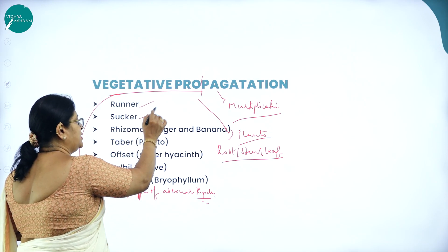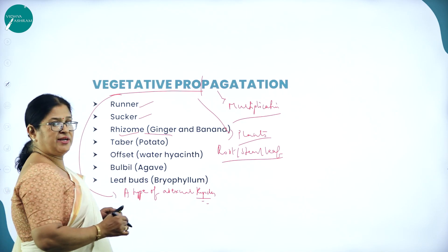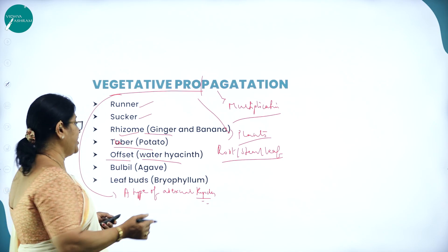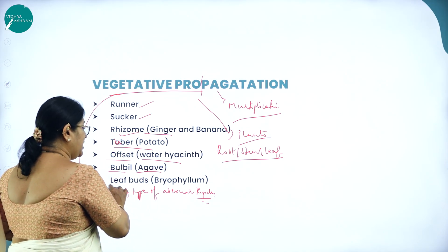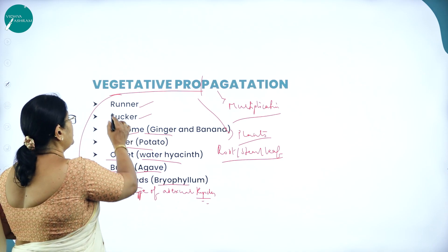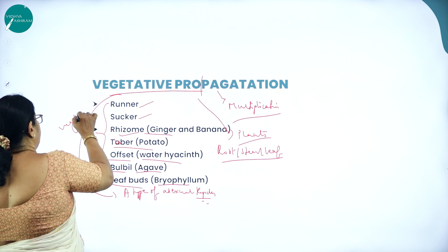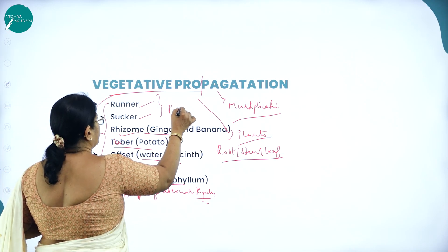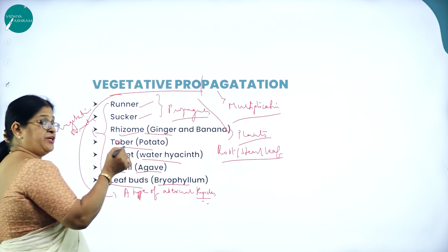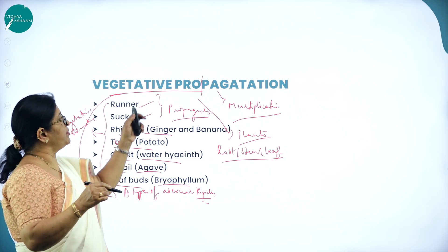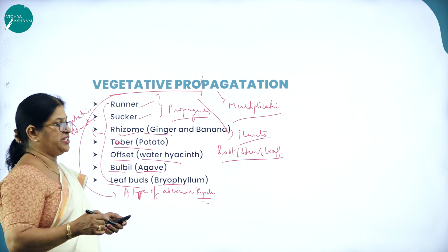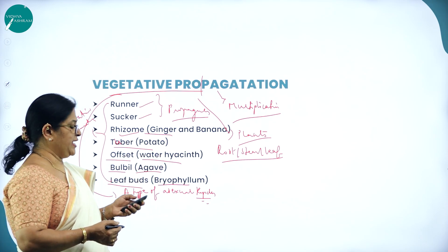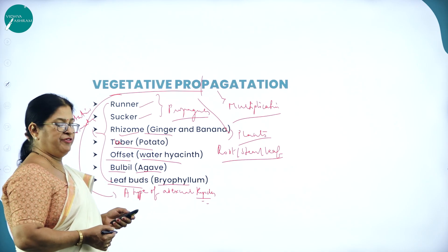Examples of vegetative propagules include: runner, sucker, rhizome (as in ginger and banana), tuber (in potato), offset (in water hyacinth, also called Eichhornia), bulbil (in agave), and leaf buds (in Bryophyllum). These vegetative structures, also called propagules, take part in the process of reproduction — hence the term vegetative propagation.